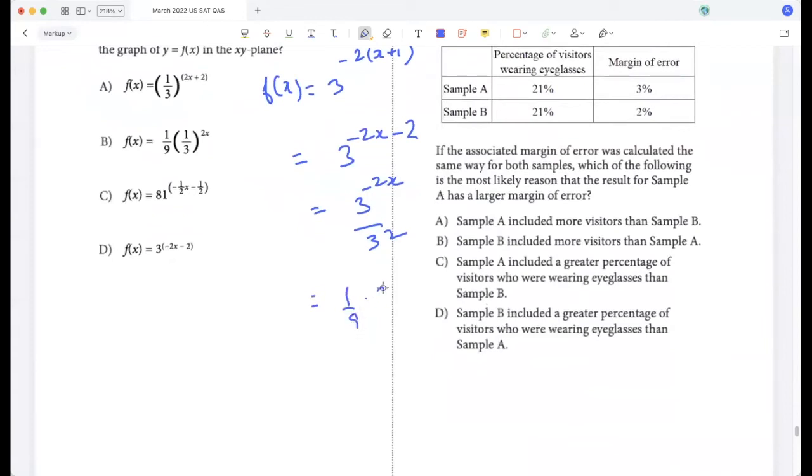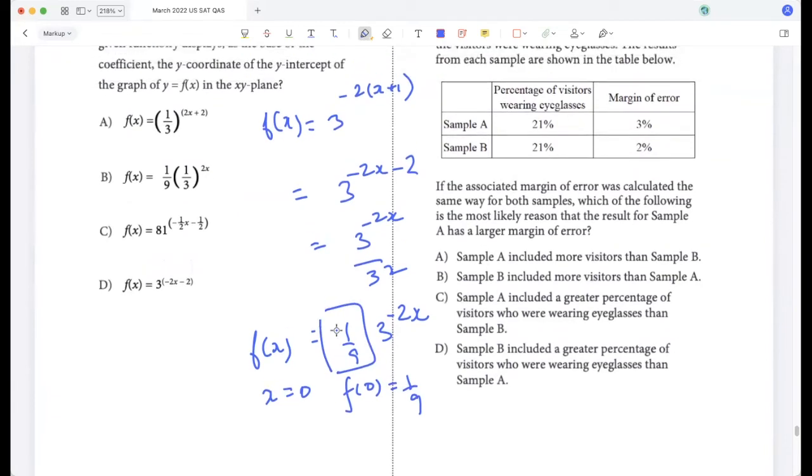That's 3 to the power minus 2x divided by 3 squared, so that is 1 by 9 times 3 to the power minus 2x. This is the y intercept representation because when you put x as 0, f of 0 is 1 by 9, which you can see as a constant here. So this would be 1 by 9 times 3 to the power 2x.